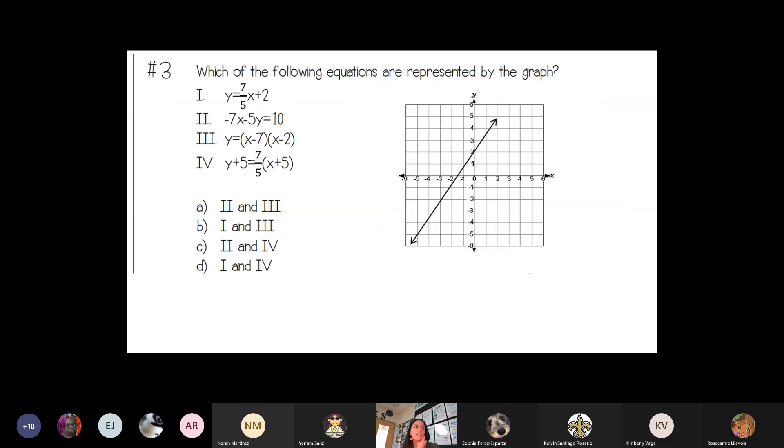For number 3, it says which of the following equations are represented by the graph? OK, for this, I need to rewrite each equation that's given here, the 1, 2, 3, and 4 in slope intercept form. So y equals mx plus b.